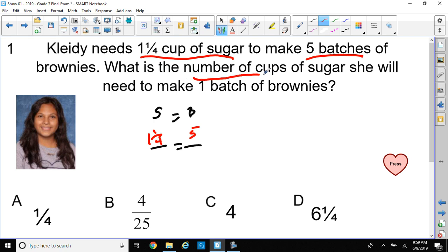So, what's the number of cups of sugar? We better put a variable here, like X, that she will need to make one batch of brownies. So, I'll put a one underneath there. And if you remember from before, we have to cross-multiply and solve for X. So, let's cross-multiply. I'll circle out cross-products. Five times X is equal to one times one and one-fourth.